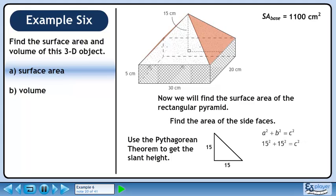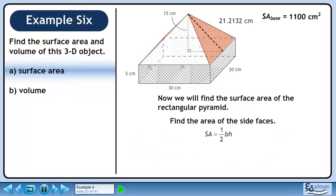Plug in 15 for a and 15 for b. This gives c² = 450. Square root both sides to get c = 21.2132 cm. This is the height of the triangular face. Now find the area of the triangular face using ½ base times height. The triangle has a base of 20 cm and a height of 21.2132 cm. The area is 212.13 cm².